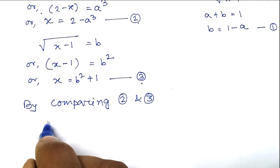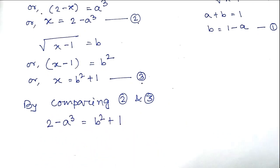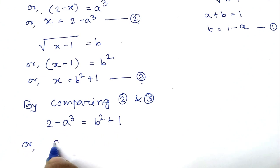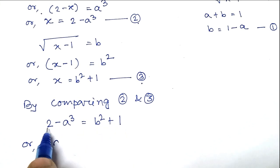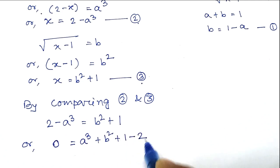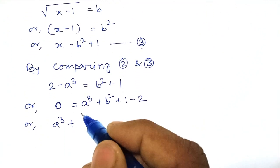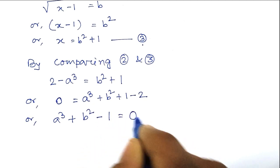By comparing equation 2 and equation 3, we get 2 minus a cubed equals b squared plus 1. Rearranging, this becomes a cubed plus b squared plus 1 minus 2 equals 0, which simplifies to a cubed plus b squared minus 1 equals 0.